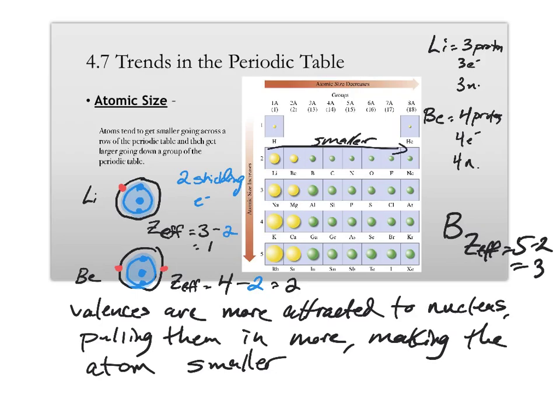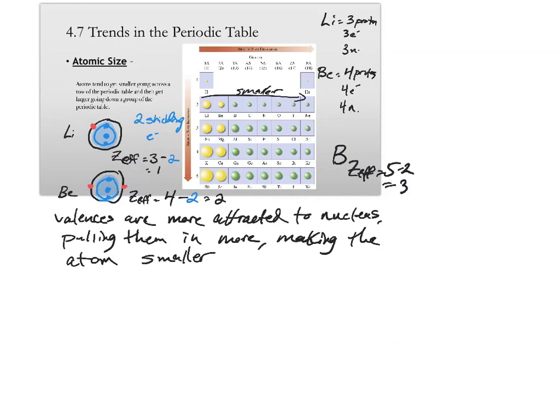As you go down a group of the periodic table, though, so let's look at lithium and sodium and potassium. We've already had lithium up there, but sodium would look like this. So, we've got the two first energy level electrons, there's eight in the second energy level, and then there's one in the valence shell.